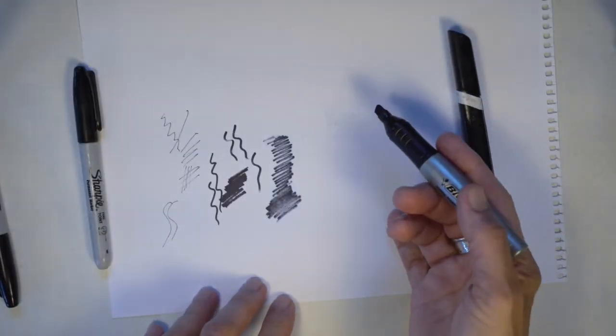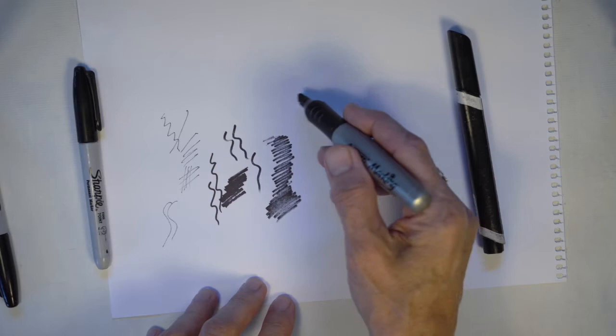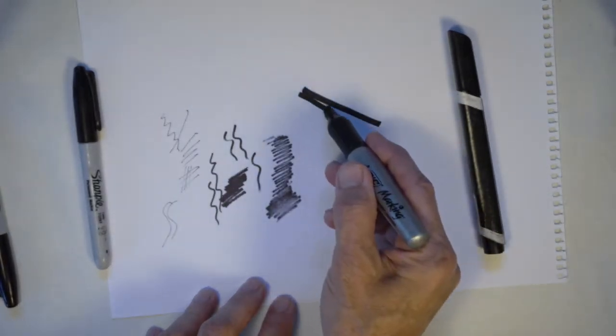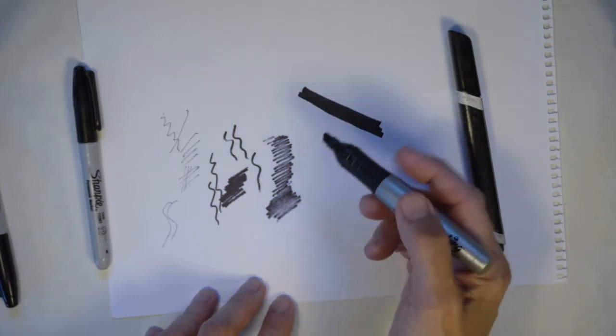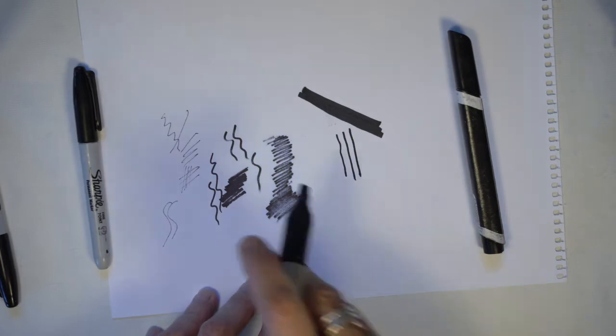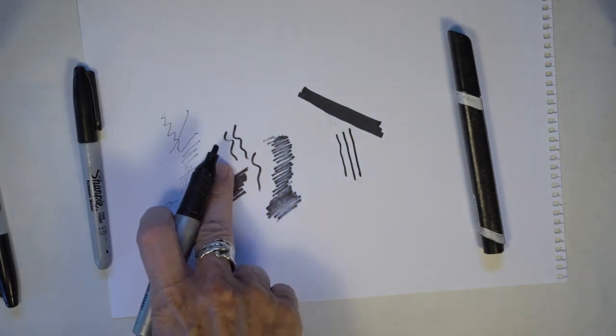This kind of marker is terrific for making large wide marks when you use the point angled slightly, like that. I can also use it vertically to make narrower lines that look an awful lot like the fine Sharpie marker point.